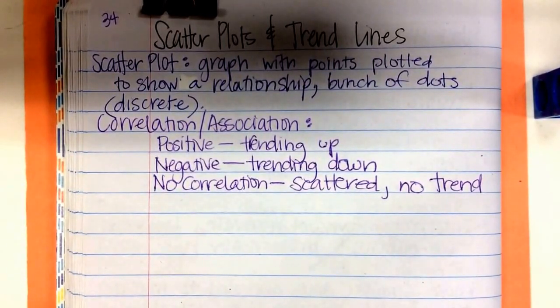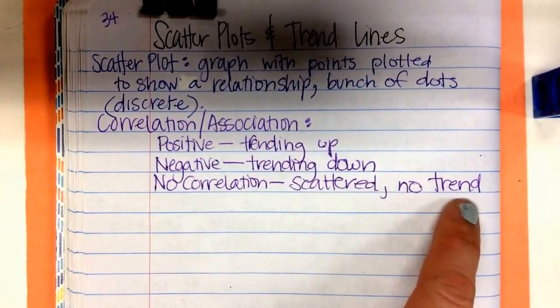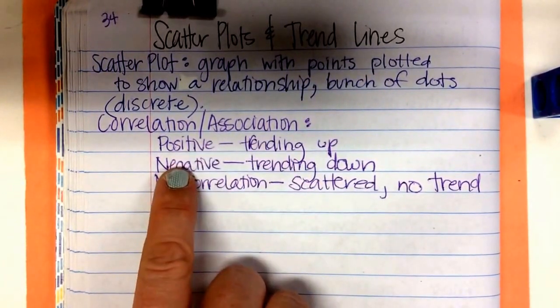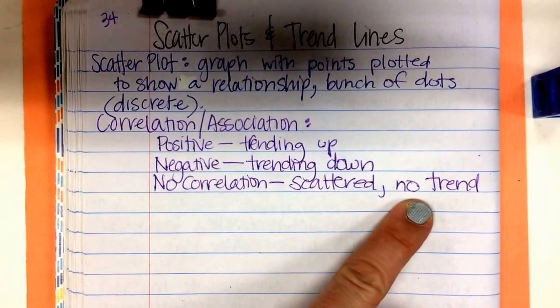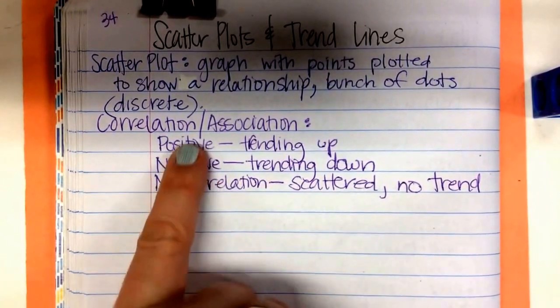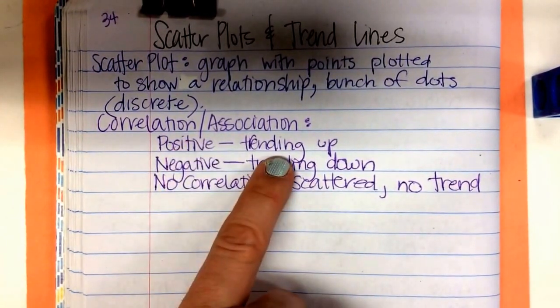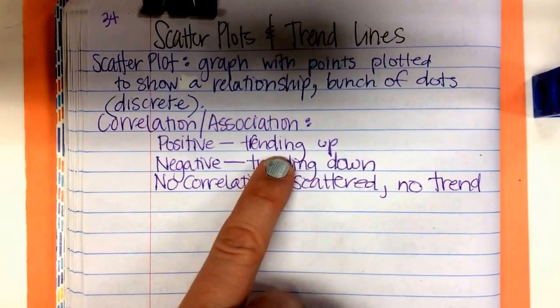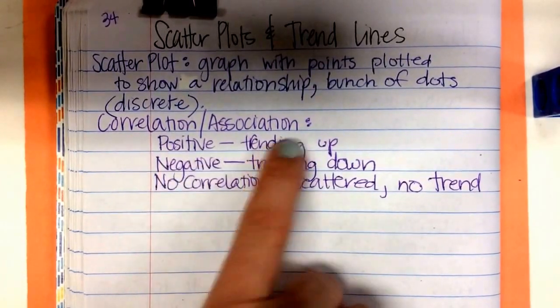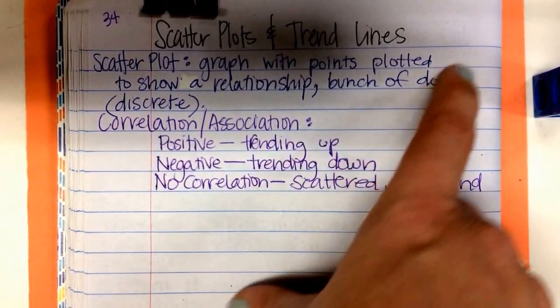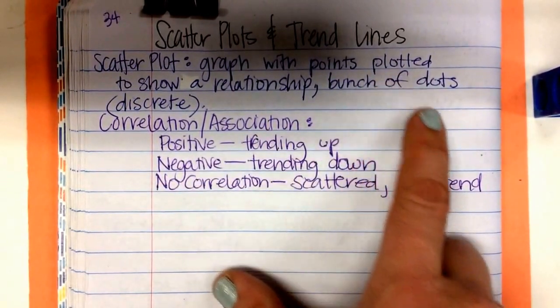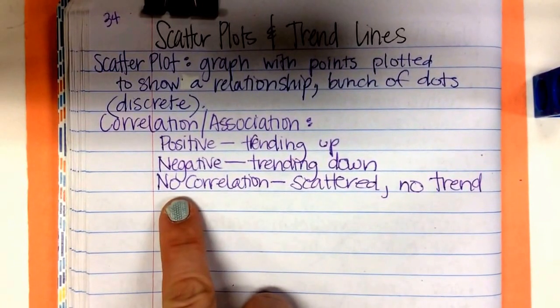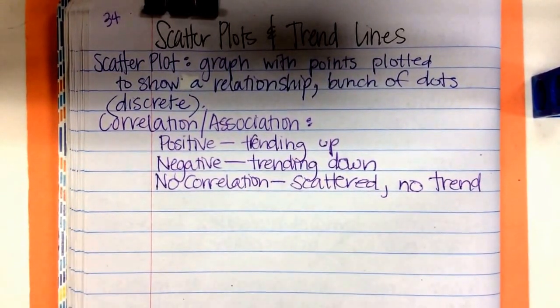And Twitter has really helped understanding positive, negative, and no correlation. How many of you follow, have a Twitter account? Right, when you check Twitter, it'll tell you what things are trending right now. If lots of people are talking about it, it's a positive correlation. Its popularity is going up. If not very many people are talking about it, its popularity is going down. And no correlation, it's just random.